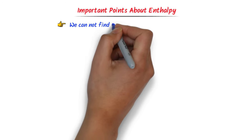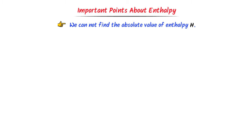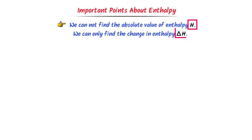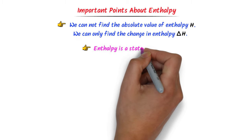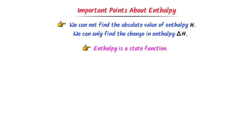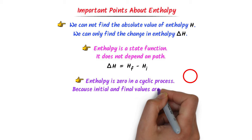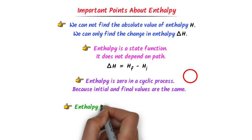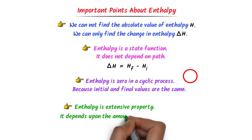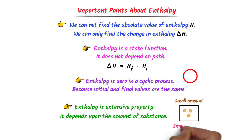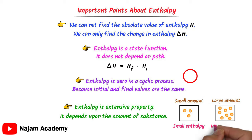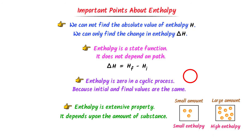Some important points about enthalpy: First, we cannot find the absolute value of enthalpy H — we can only find the change in enthalpy ΔH. Second, enthalpy is a state function; it only depends upon initial and final values, not on the path, so ΔH = Hf − Hi. Third, ΔH is always zero in a cyclic process because initial and final values are the same. Fourth, ΔH is an extensive property — it depends upon the amount of substance: less amount gives smaller ΔH, greater amount gives larger ΔH.